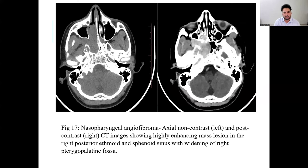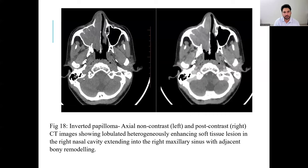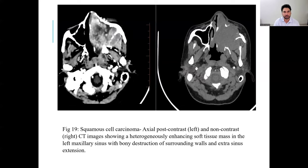In axial non-contrast on the left and post-contrast on the right, a nasopharyngeal angiofibroma is shown as a highly enhancing mass lesion in the right posterior ethmoid and sphenoid sinus with widening of the right pterygopalatine fossa. An inverted papilloma case shows axial non-contrast on the left and post-contrast on the right CT image, demonstrating a lobulated heterogeneous enhancing soft tissue lesion in the right nasal cavity expanding into the right maxillary sinus with adjacent bony remodeling.